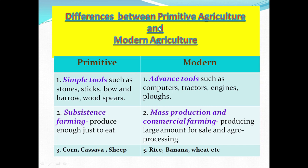There are three main differences between primitive and modern agriculture. Number one: primitive agriculture used simple tools such as stones, sticks, bows, and wooden spears. Modern agriculture uses advanced tools such as computers, tractors, engines, and plows. Number two: primitive agriculture practiced subsistence farming, where farmers produced just enough food for their family to eat.